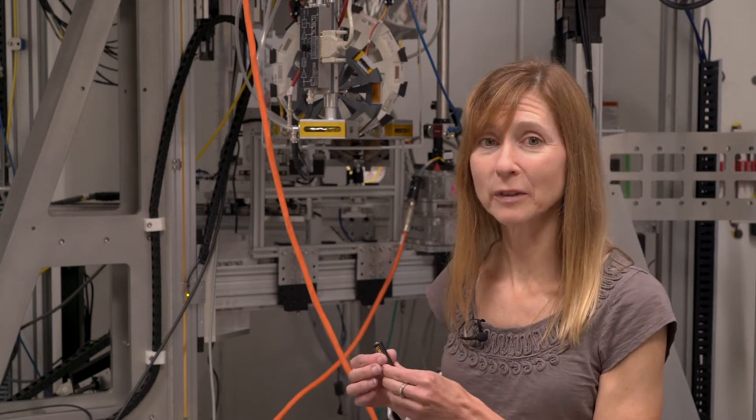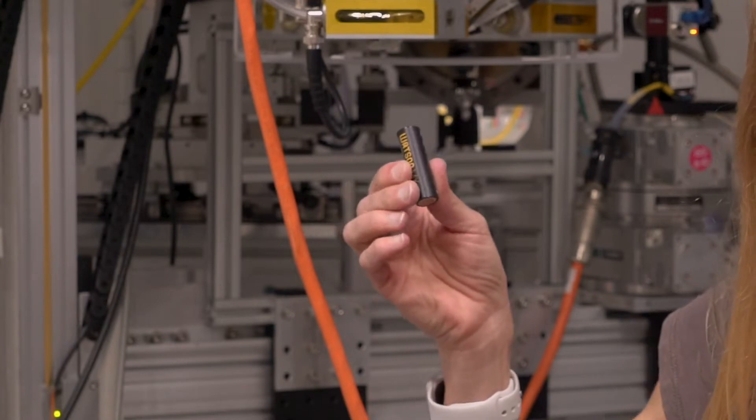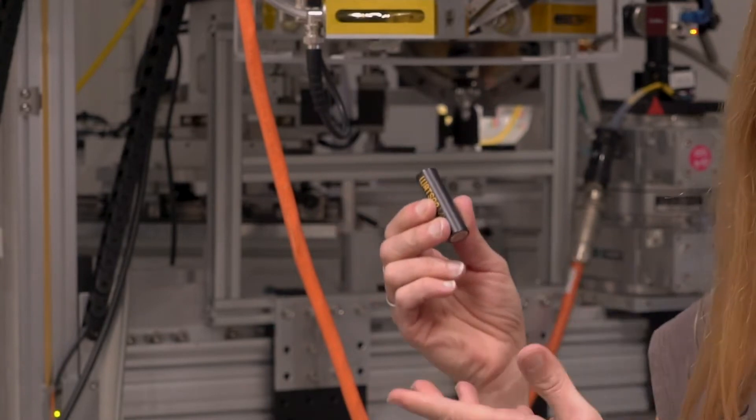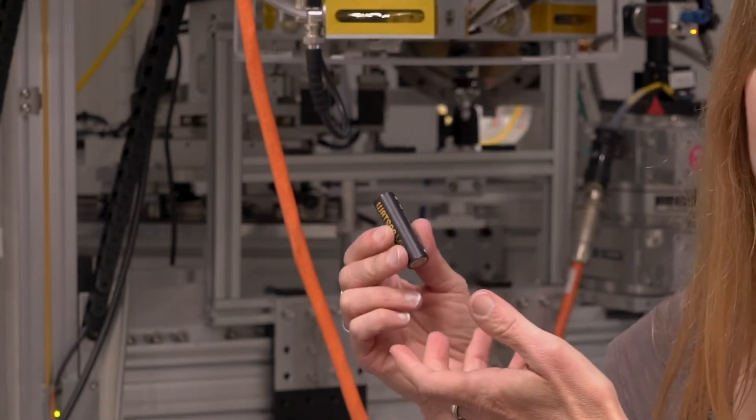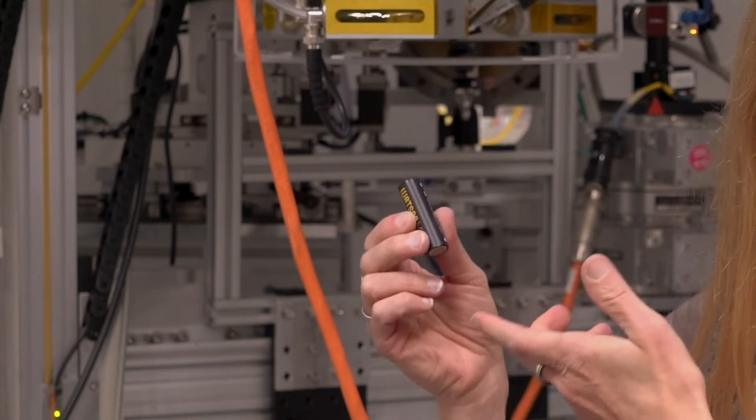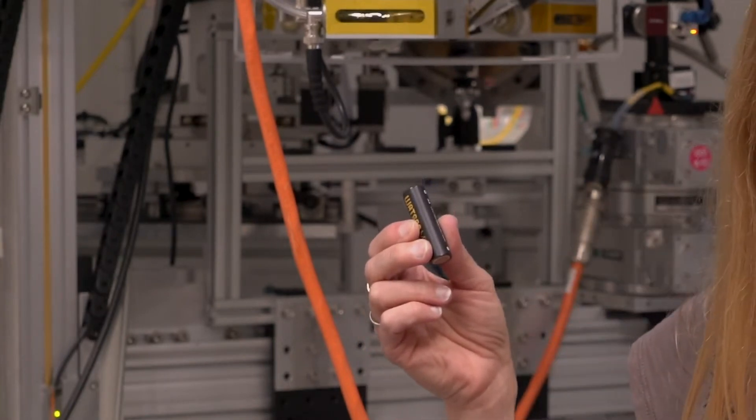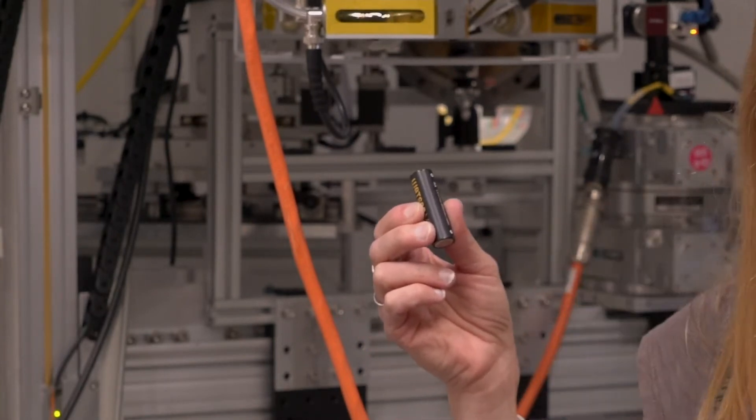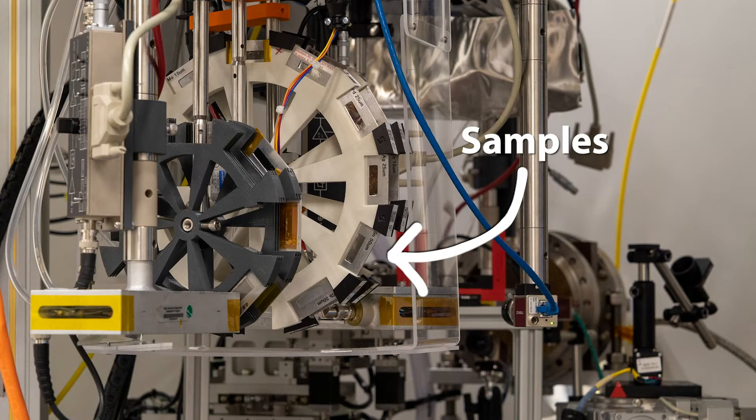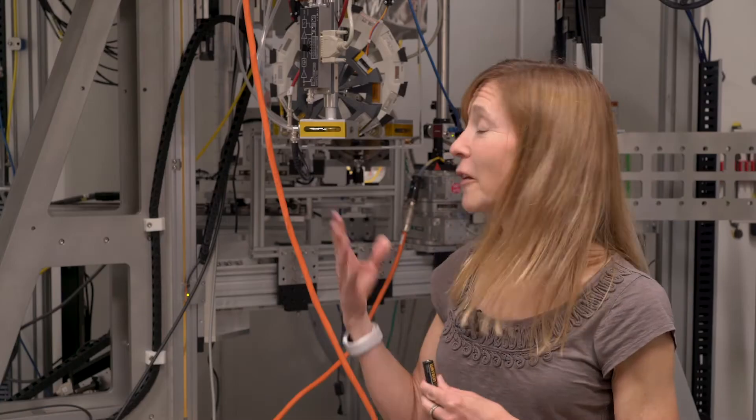The advantage to that is we can actually then tweak the composition or the molecules in the battery in order to help it perform faster or help it to charge faster, help it to hold its charge. What scientists will do is they'll prepare all different compositions of batteries, we put them in the x-ray beam and we compare the function to what the composition is in order to make it better. So that's just one example, let's move on to the next beamline.